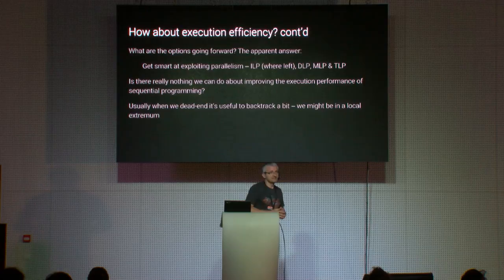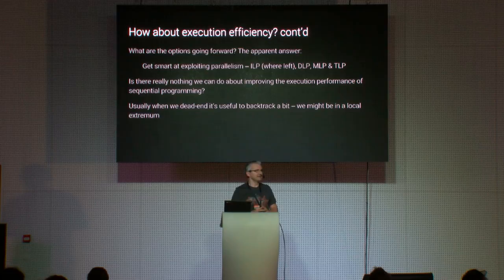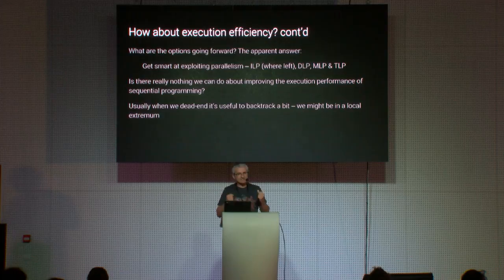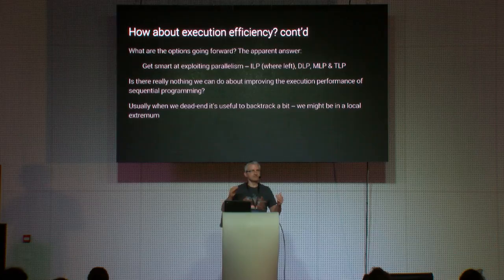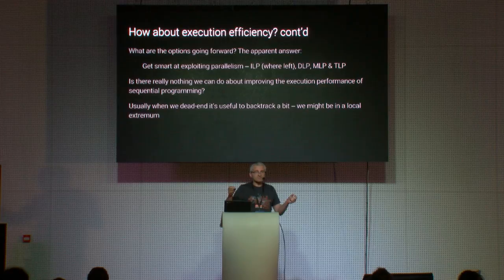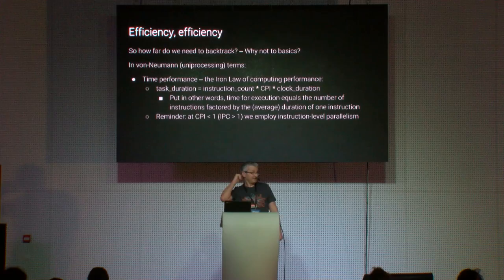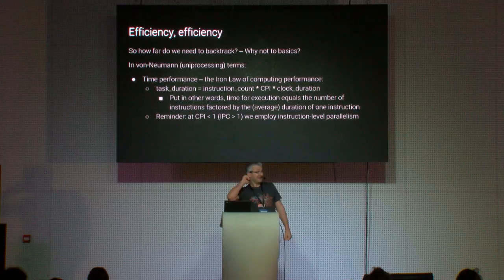Today I will not be talking about those kinds of parallelism. Is there really nothing else we could do about improving sequential programming? Are we at a dead end? Usually when somebody gets to a dead end, the normal behavior is to backtrack — to see whether they got into some local extremum of their search function. When we backtrack, we go to the last known good position, which in the case of CPU architectures could be pretty much the start of our journey.